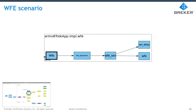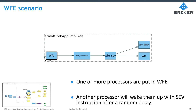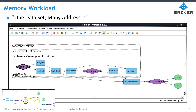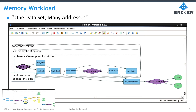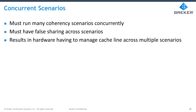WFE and WFI — wake from event and wake from interrupt — are more power-management-oriented tests, but they play into coherency because we must ensure cache retention policies are working correctly. The test generates scenarios where one or more CPUs are put into a WFE state while making sure at least one is left awake to wake up the others. Memory workload is yet another scenario — one data set moved around the design to many addresses — putting a tremendous amount of load on each CPU as it moves data or computes checksums, providing heavy stress on the design interleaved with the rest of the coherency scenarios. All of these different scenarios are run concurrently, leading to heavy verification scenarios.